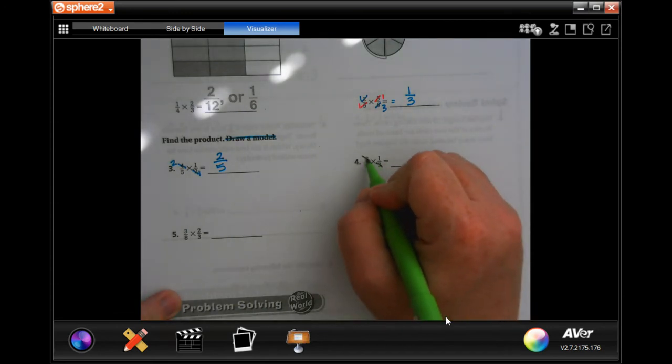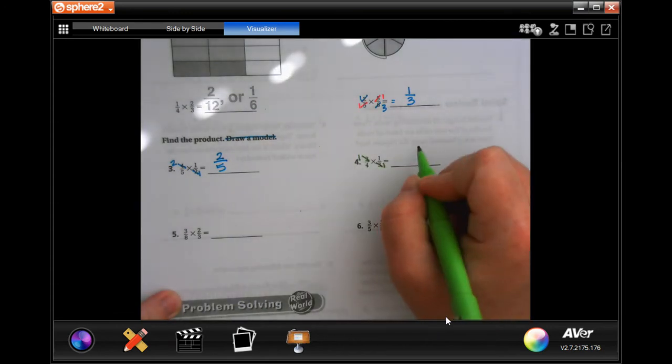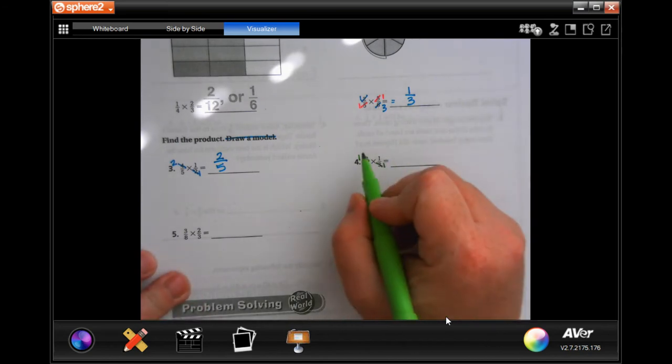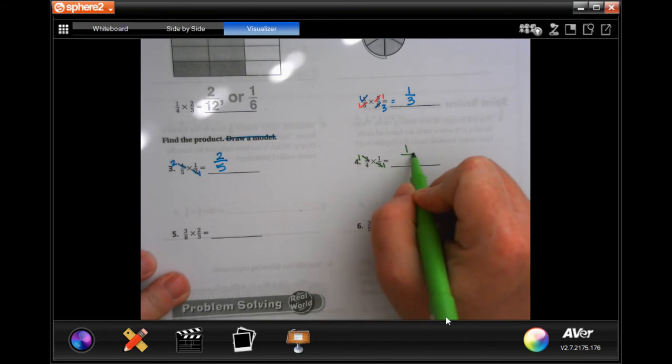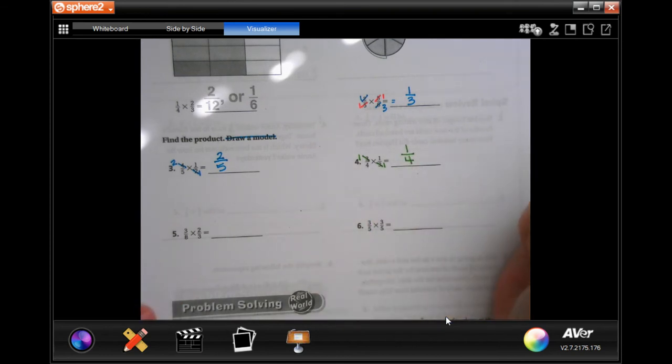See those identical numbers? Cross them out and put 1s. 3 goes into 3 once, and 3 goes into 3 once. So now, 1 times 1 is 1, and 4 times 1 is 4. Done.